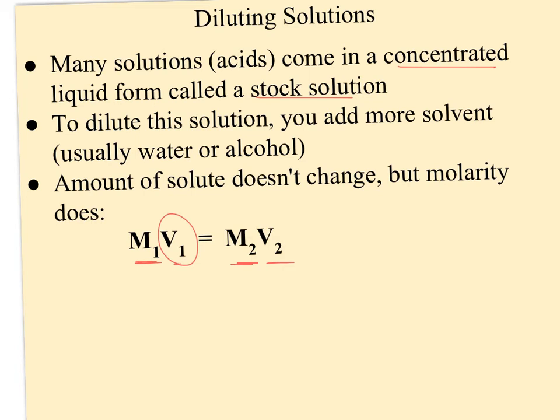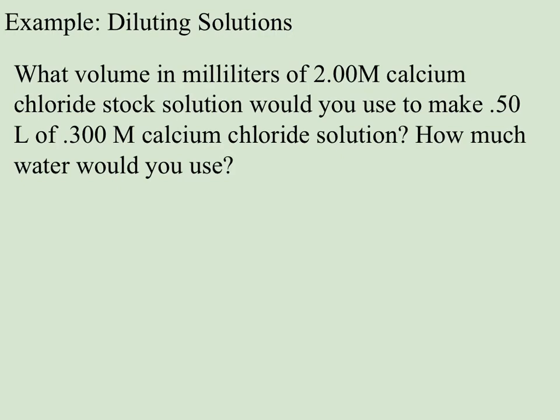So let's look at an example of what I'm talking about here. What volume in milliliters of 2 molar calcium chloride stock solution would you use to make 0.5 liters of 0.3 molar calcium chloride solution? How much water would you use? So the equation we had on the previous page said that M1 times V1 should equal M2 times V2. And the reason for this is that my original stock solution molarity is going to be high, whereas the volume will be less. And when I get done, I'm going to increase the volume but decrease the molarity. So when I multiply them, it should be equal to what I started with.